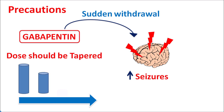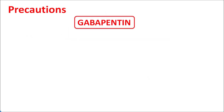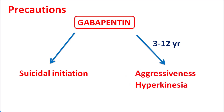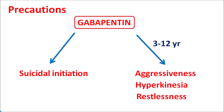Gabapentin can also increase suicidal ideation, similar to other anti-epileptic drugs. When given to pediatric patients aged 3 to 12 years, care should be taken as this drug can increase aggressiveness, hyperkinesia, increased movements, and restlessness. In this age group, gabapentin should be carefully administered.